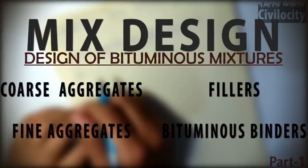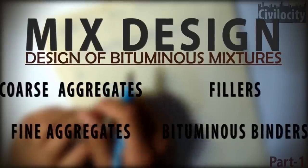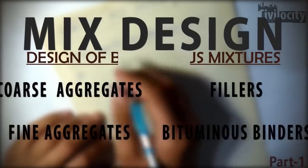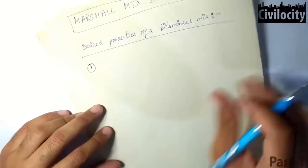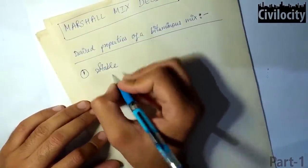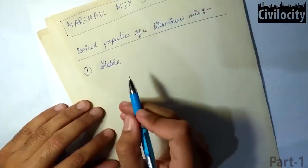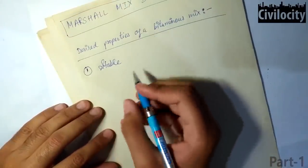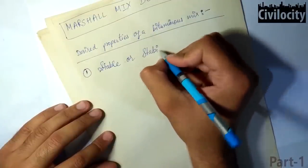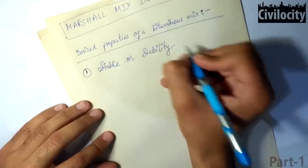Since this bituminous mix is to be used as a surface course of a flexible pavement, we desire some properties that it should possess. These desired properties of a bituminous mixture are: we want our bituminous mix to be stable to withstand the stresses and deformation under the repeated application of wheel loads.